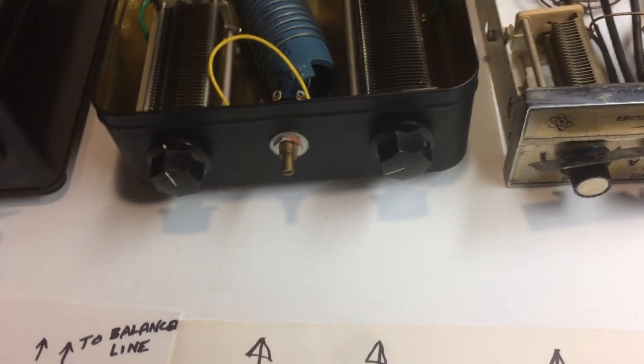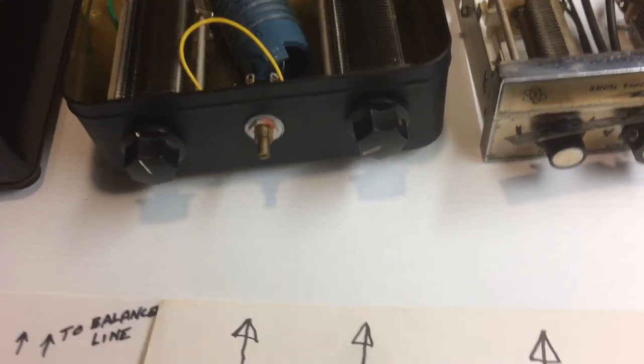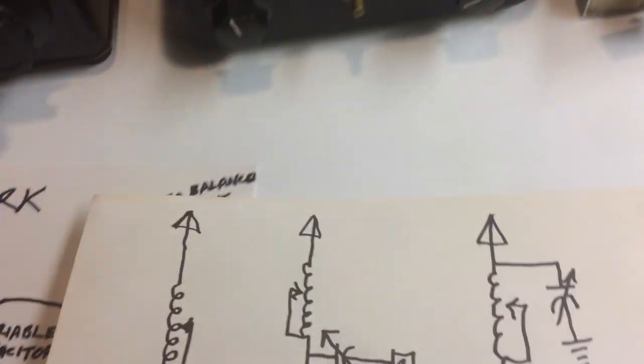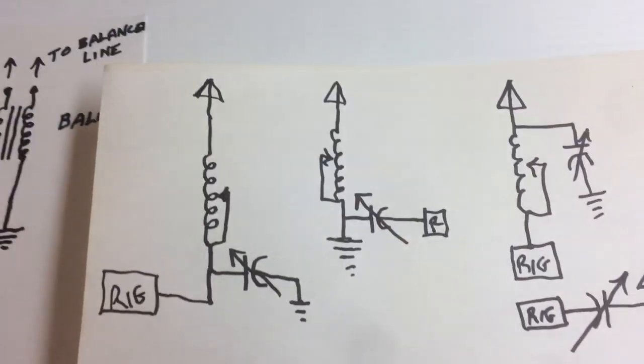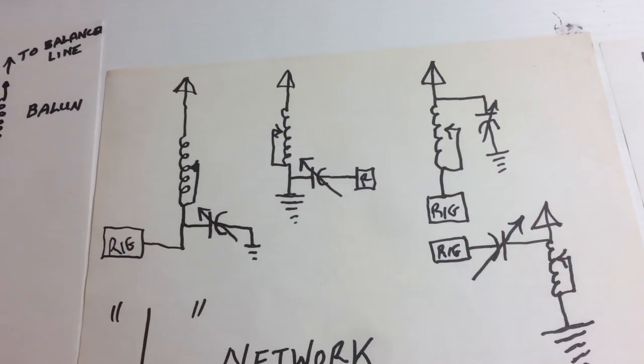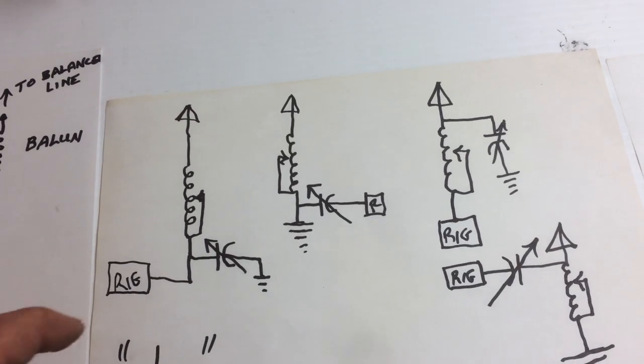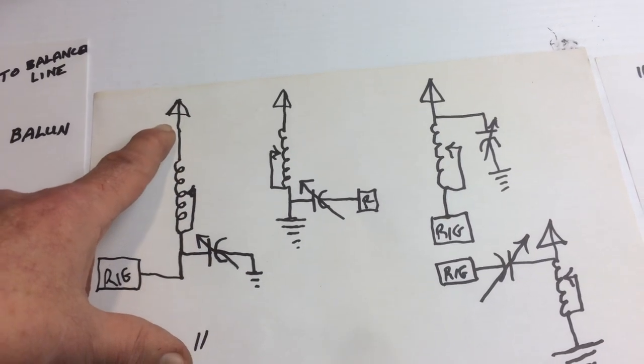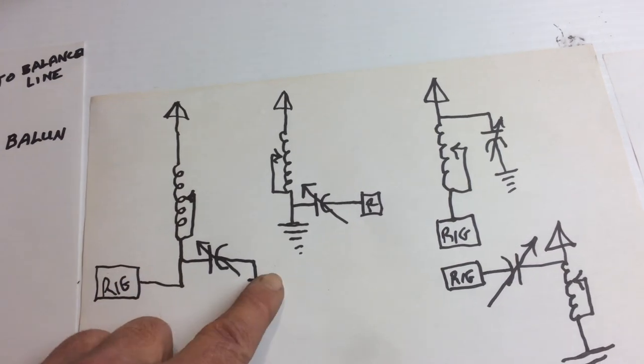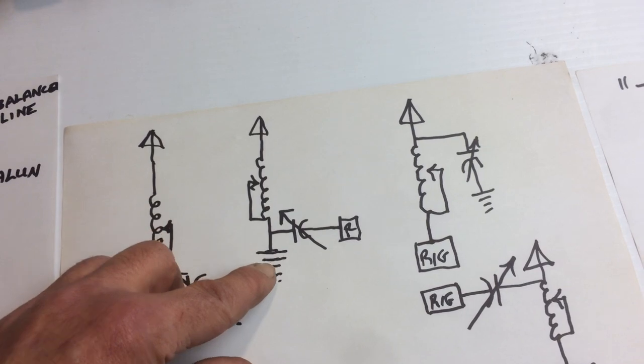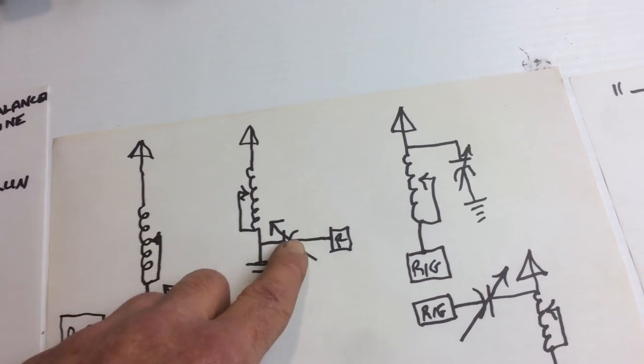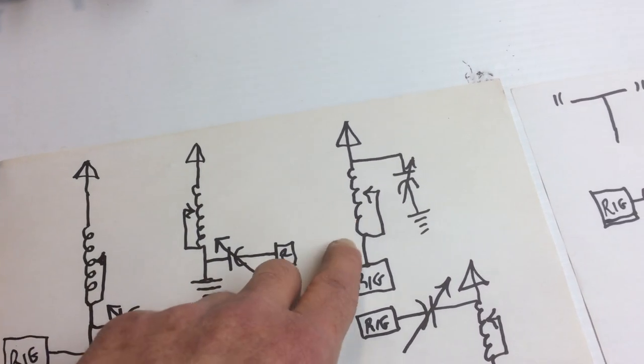T network is probably the most common of all of them. There's a couple of other different ways you can do the L network as well. The L network, the simplest of all, is just two components. So you get in from your antenna, through your coil, bypass capacitor to ground and then out to your rig. Or you can come in straight through your coil, have the end of the coil grounded, and then through a capacitor to your rig.